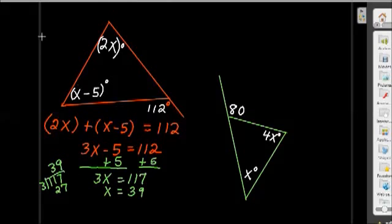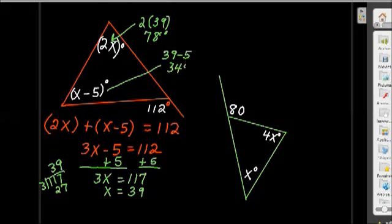Now, there really wasn't a problem written here. But the questions usually are find x or find the angle measure. Let's just assume I was supposed to find the angle measures for both. My 2x is now going to become 2 times 39 or 78. So, it's 78 degrees. And my x minus 5 is going to become 39 minus 5, or 34 degrees.